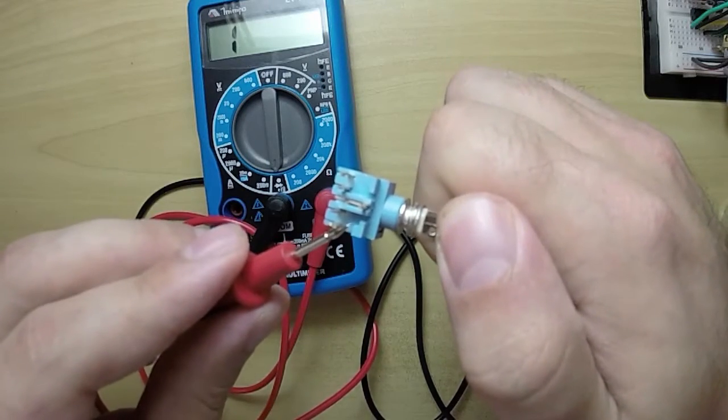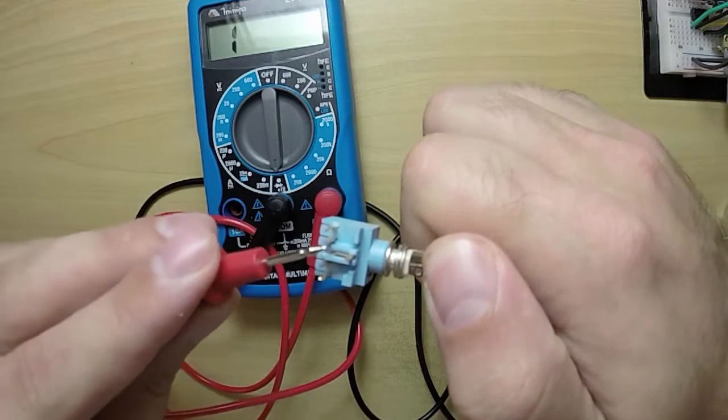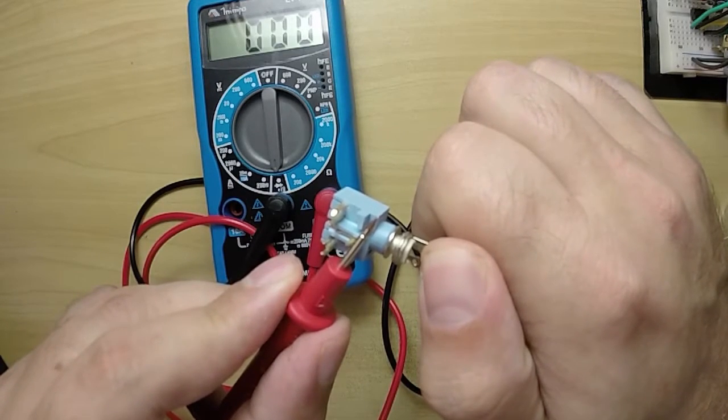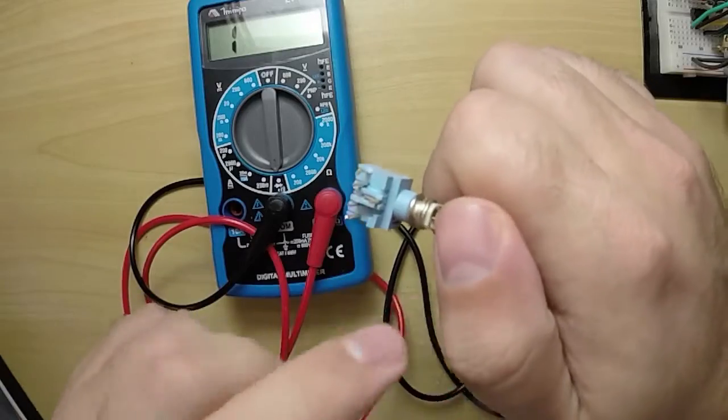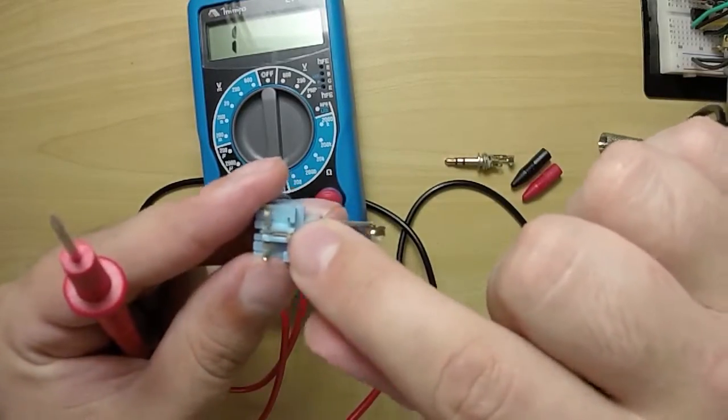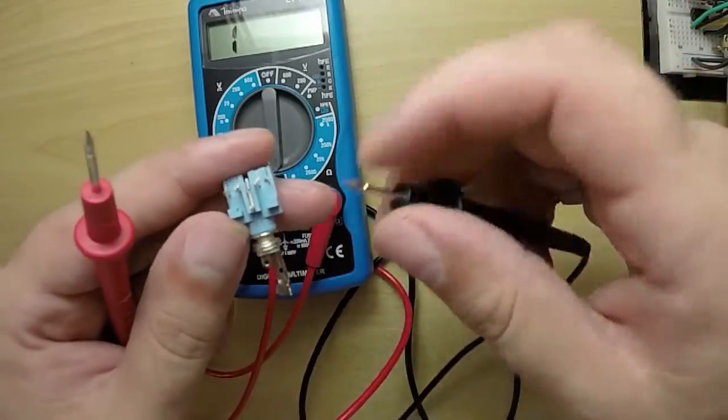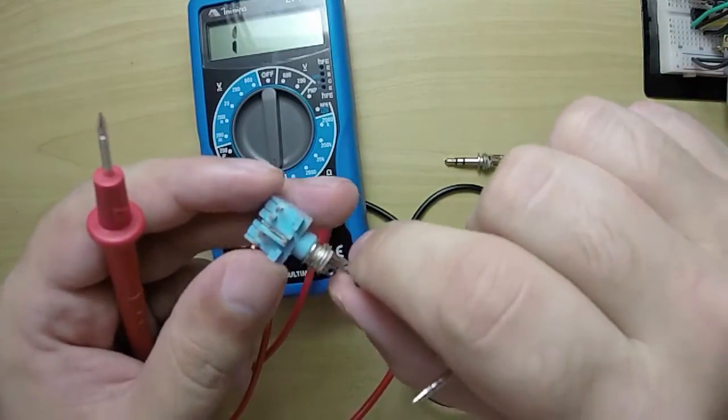and then you would test each of these. So here I've got nothing, here I've got nothing, and here I've got continuity, which means that this middle one is the ground, which is what I suspected anyway because it just would seem like the right one to be ground for a stereo